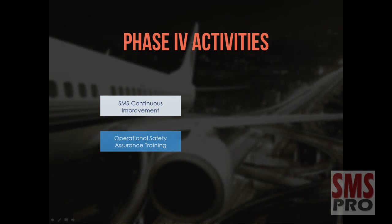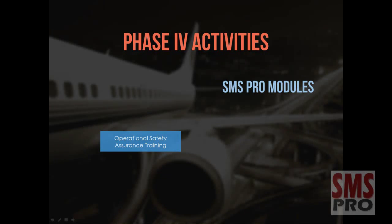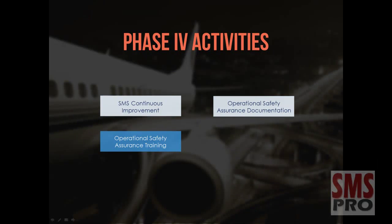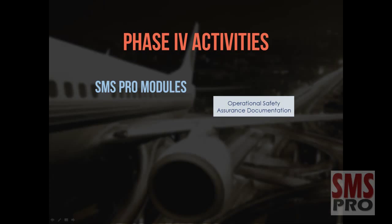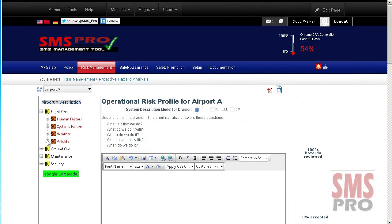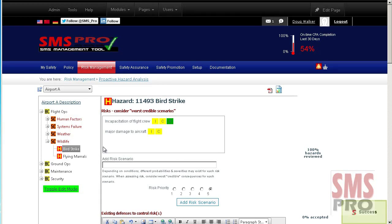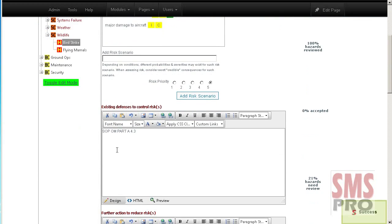Develop training relevant to operational safety assurance. Training necessary to provide operational safety assurance can be managed and documented using the Training and Qualifications Module and the Safety Survey. Develop documentation relevant to operational safety assurance. The SMS Pro Proactive Hazard Analysis Tool is a module that can help achieve this. Using the Proactive Hazard Analysis Tool, your operation can systematically identify and document hazards, risks associated with those hazards, and control measures for each risk.